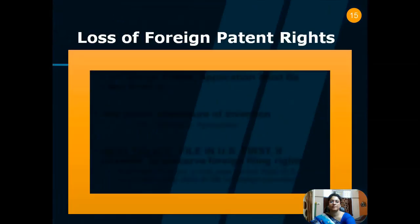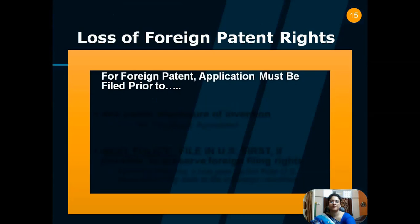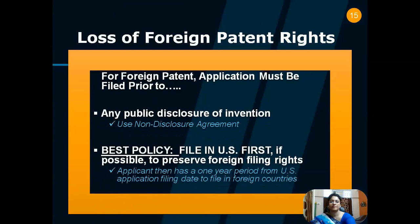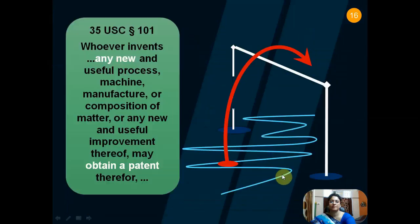We can have a loss of foreign patent rights. For a foreign patent, the application must be filed prior to any public disclosure of the invention — whether in the form of a speech, journal paper, or conference paper. The best way to handle this is to use a non-disclosure agreement. The best policy is to file in the US first, if possible, to preserve foreign filing rights. The applicant then has a one-year period from the US application filing date to file in foreign countries. As per 35 US Code 101, whoever invents any new and useful process, machine, manufacture, or composition of matter, or any new and useful improvement thereof, may obtain a patent.